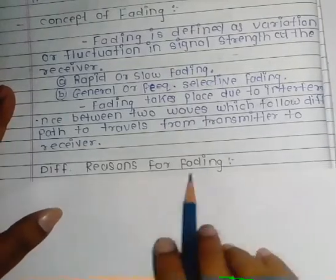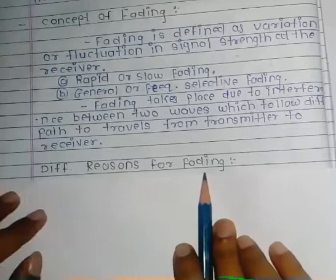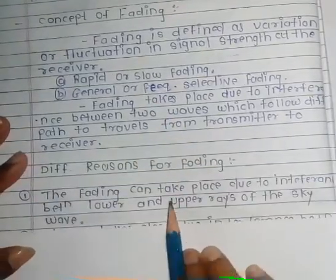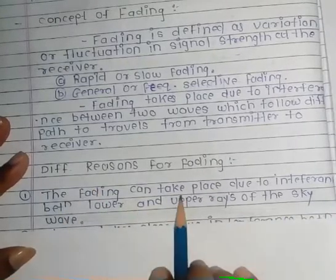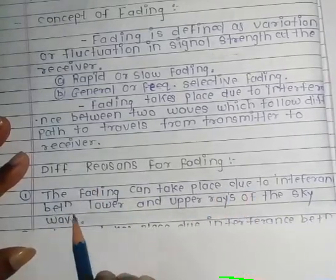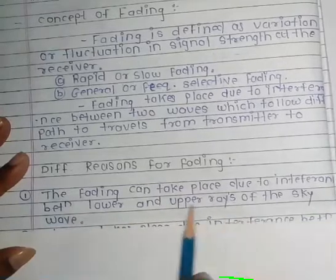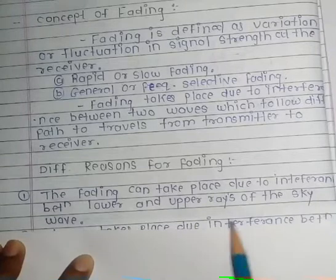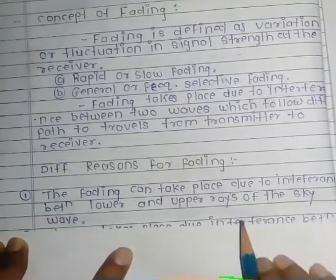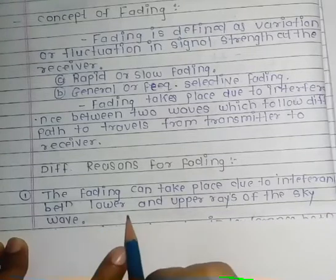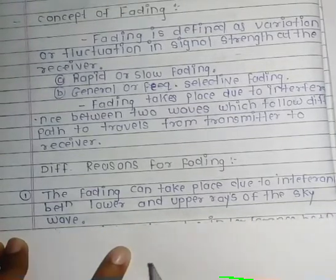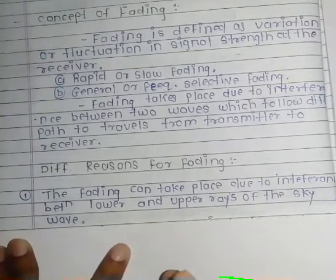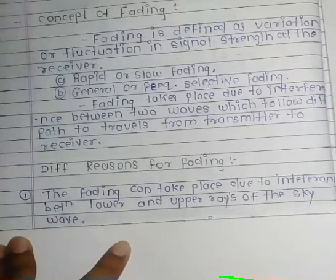Now we see different reasons for fading — this is an important question from the exam point of view. The first reason is that fading can take place due to interference between the lower and upper rays of the sky wave. If there is interference or disturbance between the upper and lower waves, then fading can occur.